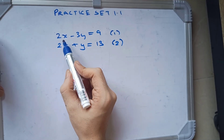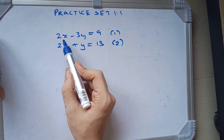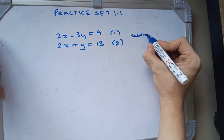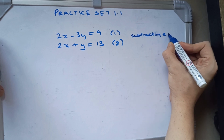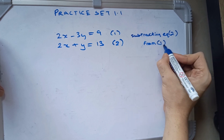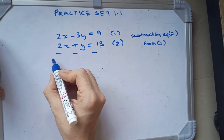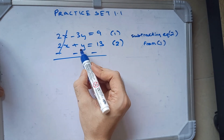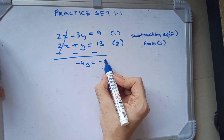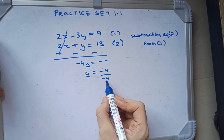Let's do the next sum. We have 2x minus 3y which is equal to 9, and 2x plus y which is equal to 13. As you can see, the x values are the same, so we can directly subtract. Subtracting equation 2 from equation 1, 2x cancels. We have minus 3y minus y which is minus 4y, and 9 minus 13 which is minus 4. y is equal to minus 4 upon minus 4, which is 1.